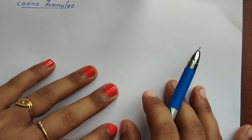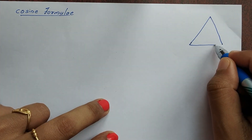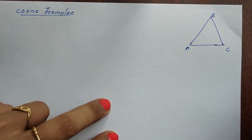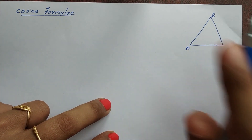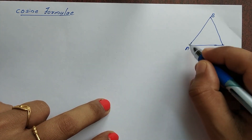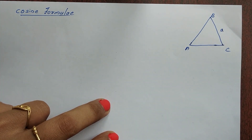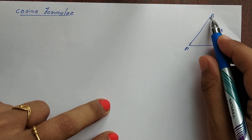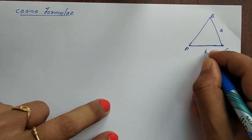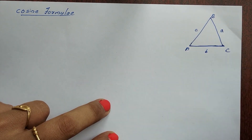I will use a triangle A, B, C — the figure from the textbook. This angle is angle A, and the opposite side is small letter a. This angle is B, and the opposite side is small letter b. This angle is C, and the opposite side is small letter c.